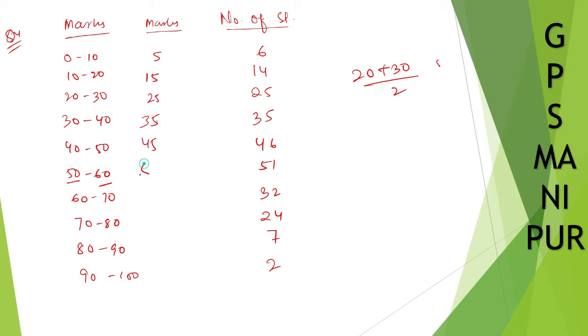Or you can do 60 plus 50 divided by 2 also, 60 plus 50, 110 divided by 2, 55. You can do like this also. Or you can just find the middle number also. So 60 to 70, it will be 65. 70 to 80, it will be 75. 80 to 90, it will be 85. 90 to 100, it will be 95.